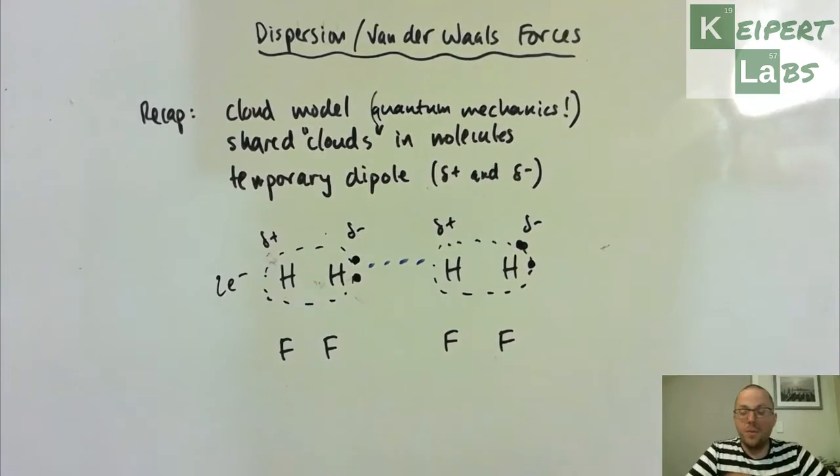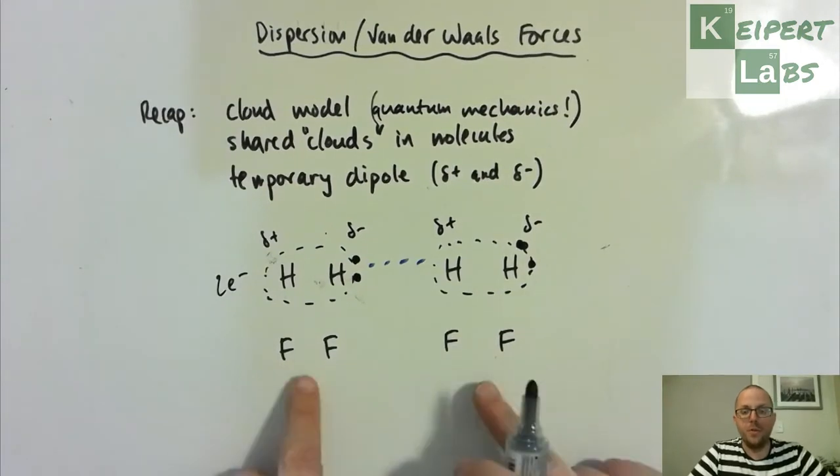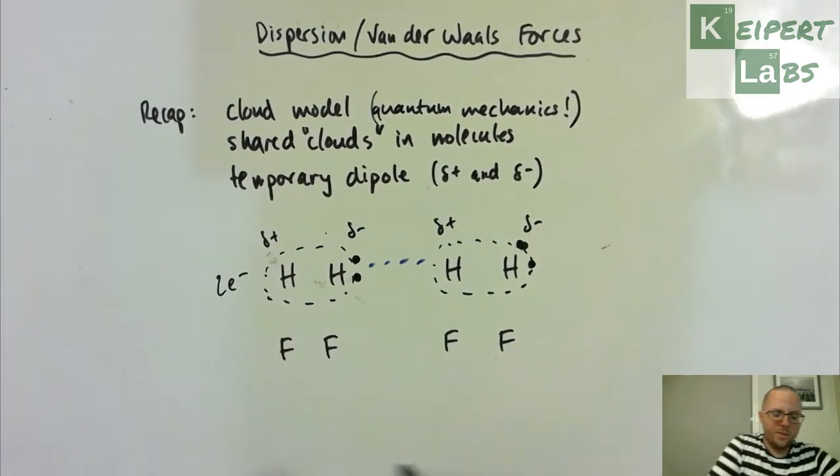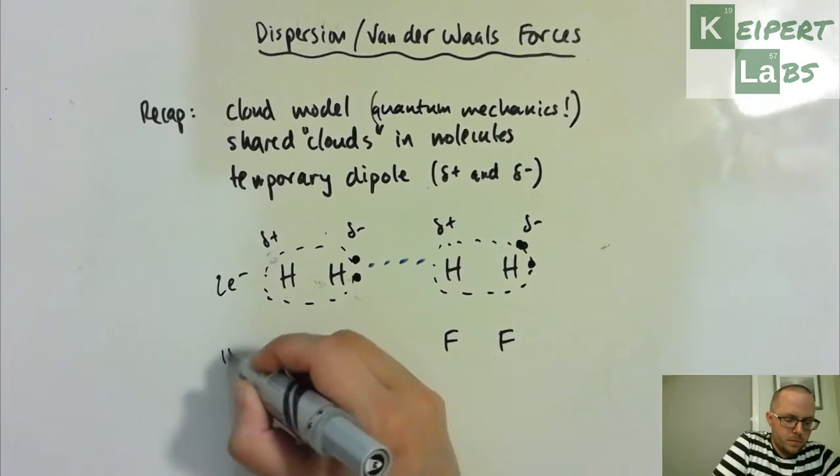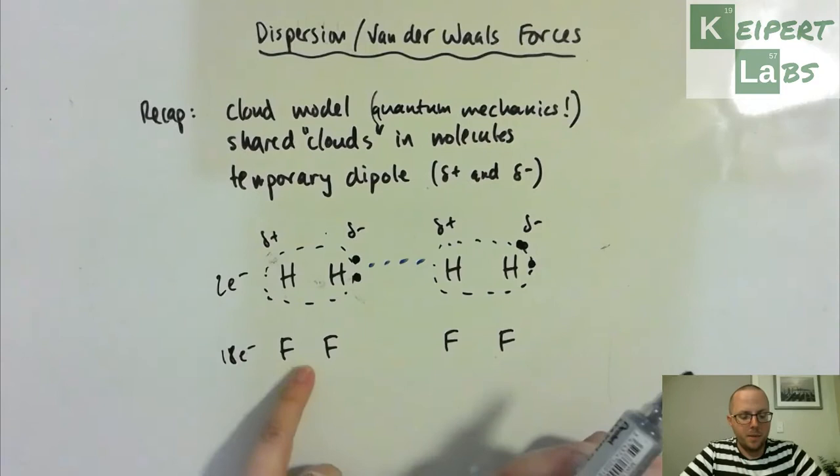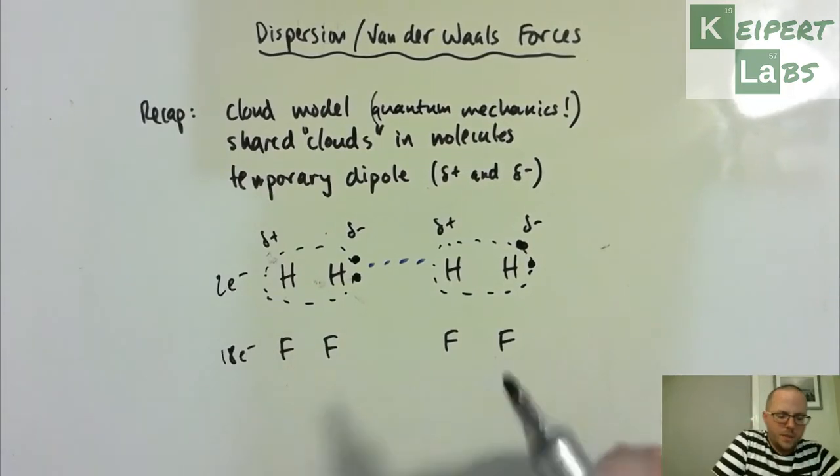We've introduced that before - that is a force of attraction. We're going to define it more specifically in a sec. But I want you to now think about what would happen if we got two molecules of fluorine gas instead. Each fluorine atom has nine electrons, so each molecule has 18 in total.